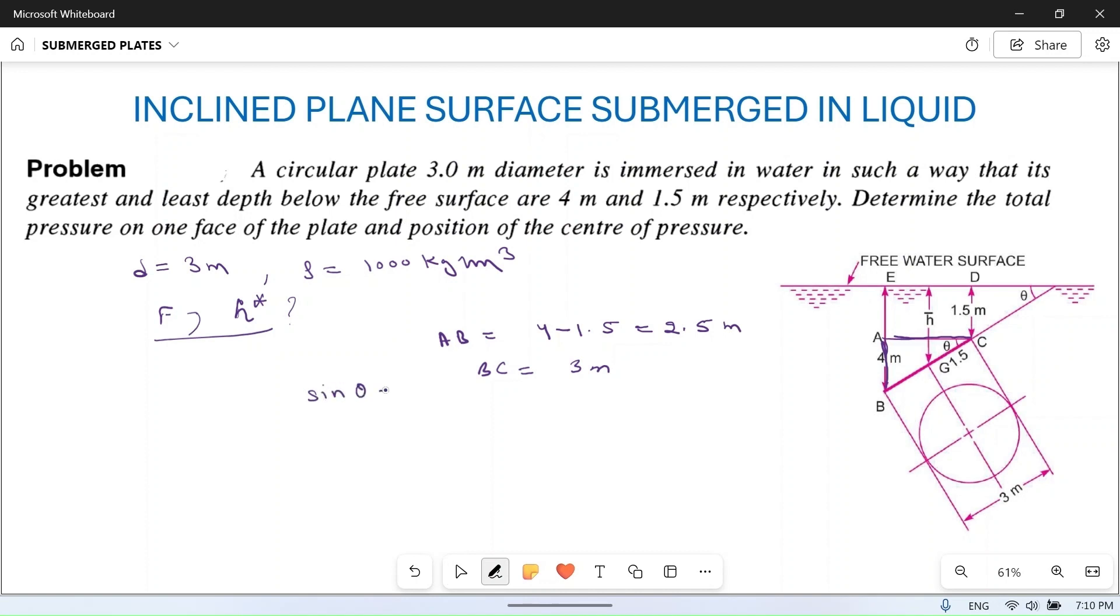Sine theta is equal to AB upon BC, which is equal to 2.5 upon 3. This is equal to 0.8333. So this is the value of sine theta.